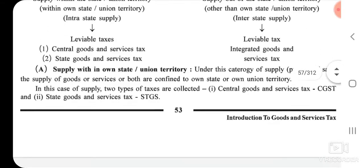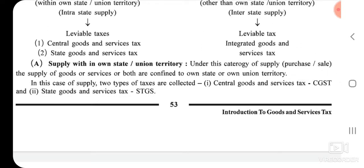Under Intrastate Supply — supply within own state or union territory — the supply of goods or services or both is confined to one's own state or own union territory. In this case, two types of taxes are collected: first, Central Goods and Service Tax (CGST), and second, State Goods and Service Tax (SGST). For union territory transactions, it is Union Territory Goods and Service Tax (UTGST) instead of SGST.